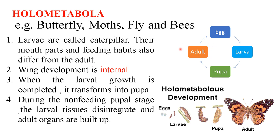The wing development is internal, as the larvae pupate first and then the wings are developed inside the pupa, and they come out as a winged adult. The pupa is a non-feeding stage where the larval tissues disintegrate and the adult organs are built up.